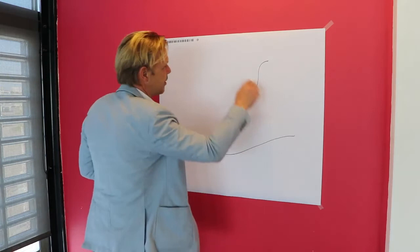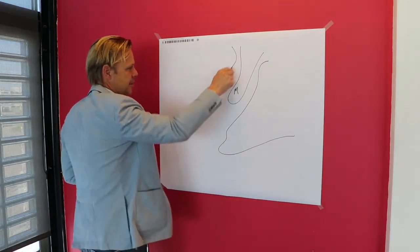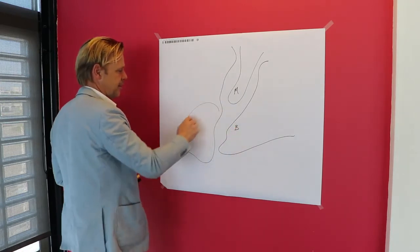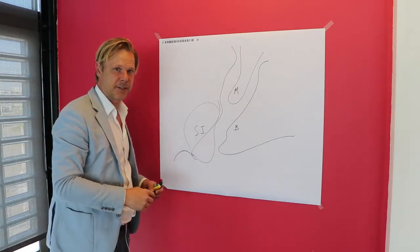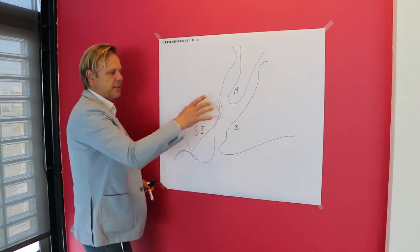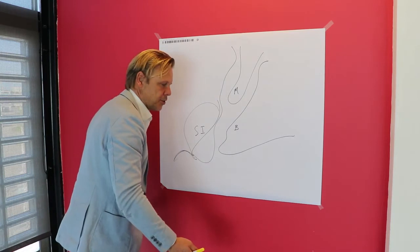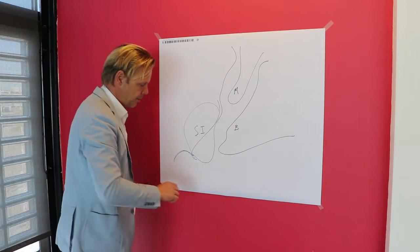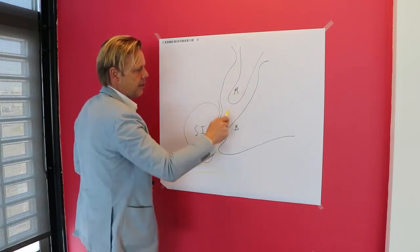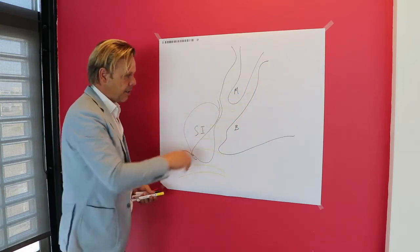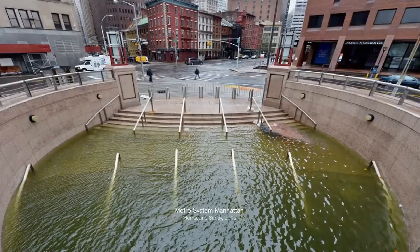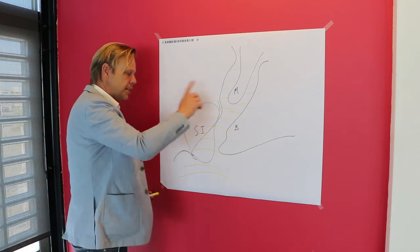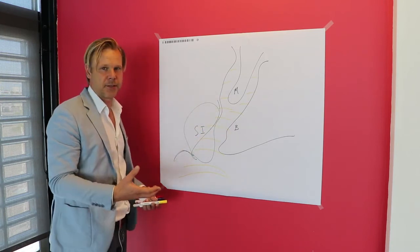Here is Manhattan in New York, here is Brooklyn, and this is Staten Island — and this is essentially the estuary of the Hudson River. When Sandy hit the coast of America, there was a strong wind blasting inland and a surge of water that drove into the Hudson estuary, flooding large areas of Brooklyn, Staten Island, and Manhattan. The metro system of Manhattan was completely flooded and large areas were affected.